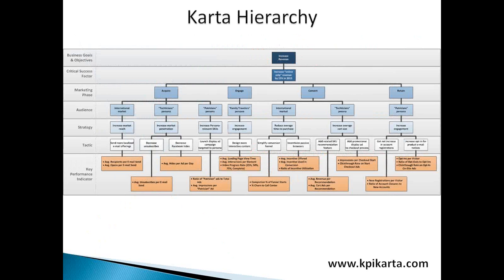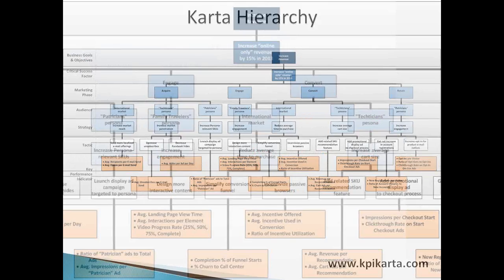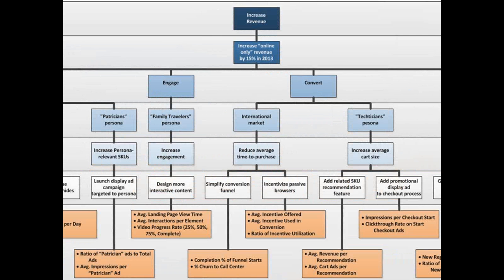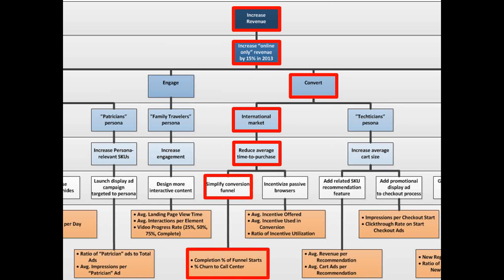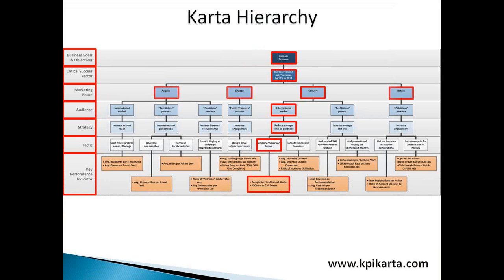What we build using this process is a Carta hierarchy showing exactly how those KPIs were formed and the history of creating them, so that everyone can buy into it. The critical success factor was increased online revenue by 15% over 2013. The marketing phase was convert, the audience was the international market, the strategy was reducing average time to purchase, and the tactic was to simplify the conversion funnel. This hierarchical structure means that everybody in the organization, even those doing low-level tactical work, can see that what they're doing is contributing to top-level goals and objectives.